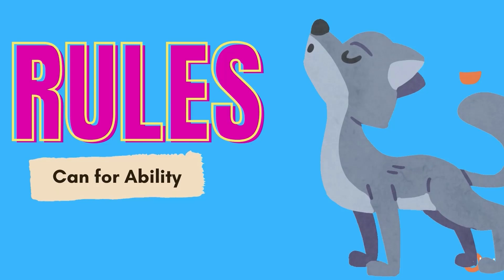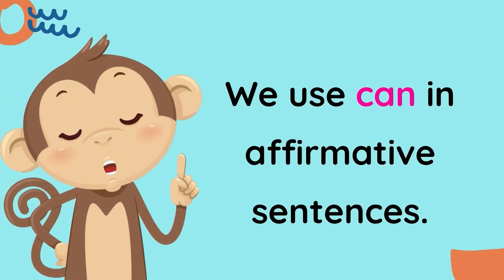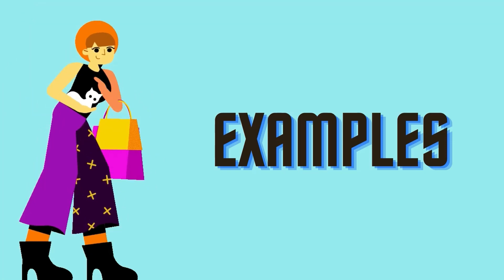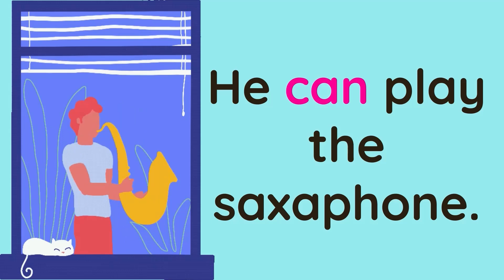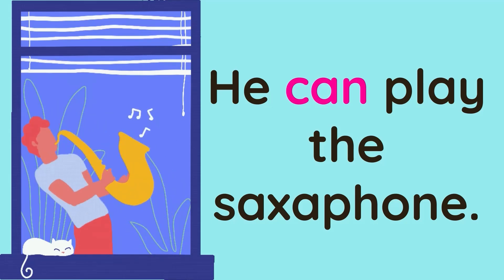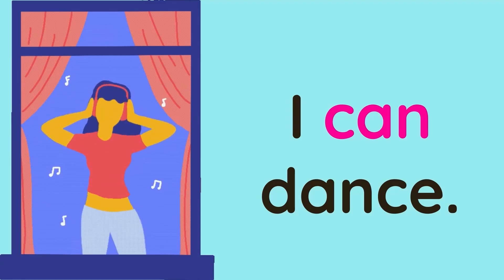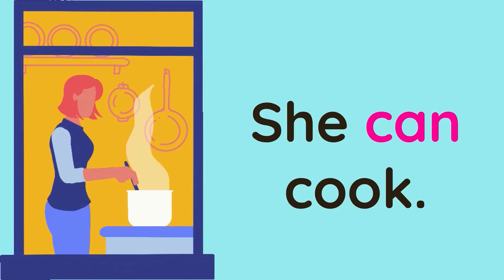Let us go through the rules. Can for ability. Rule number one: we use can in affirmative sentences. Let us look at a few examples. Number one: he can play the saxophone. The second example: I can dance. And the third example: she can cook.